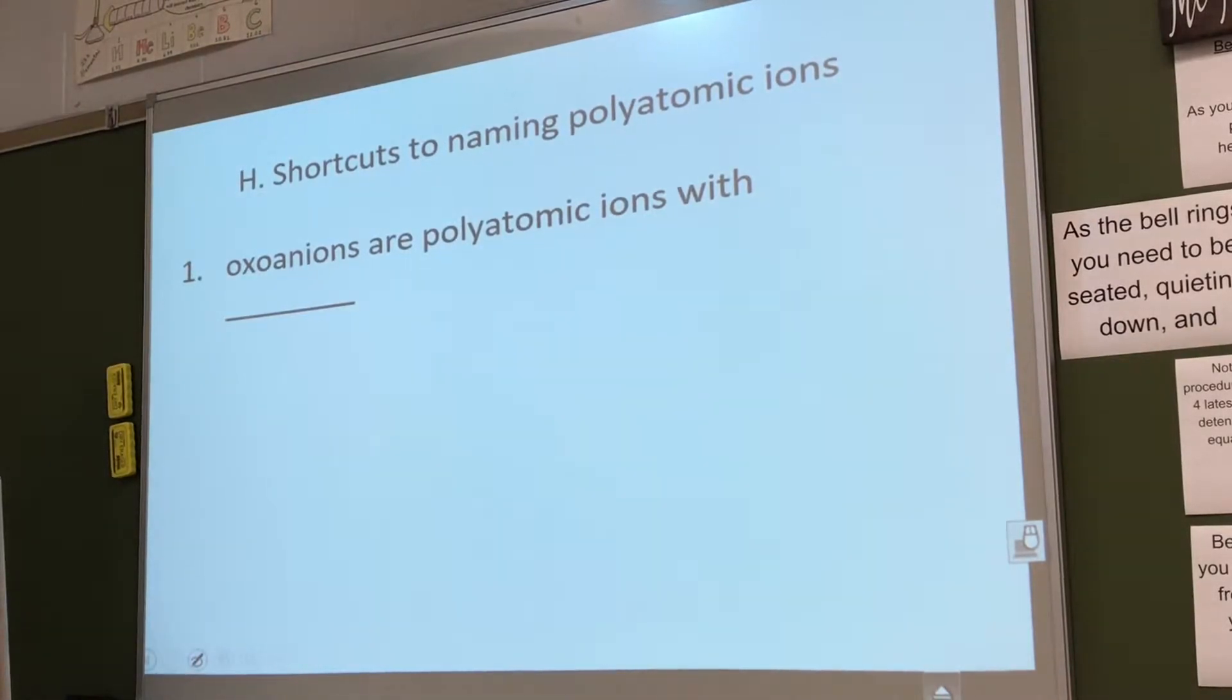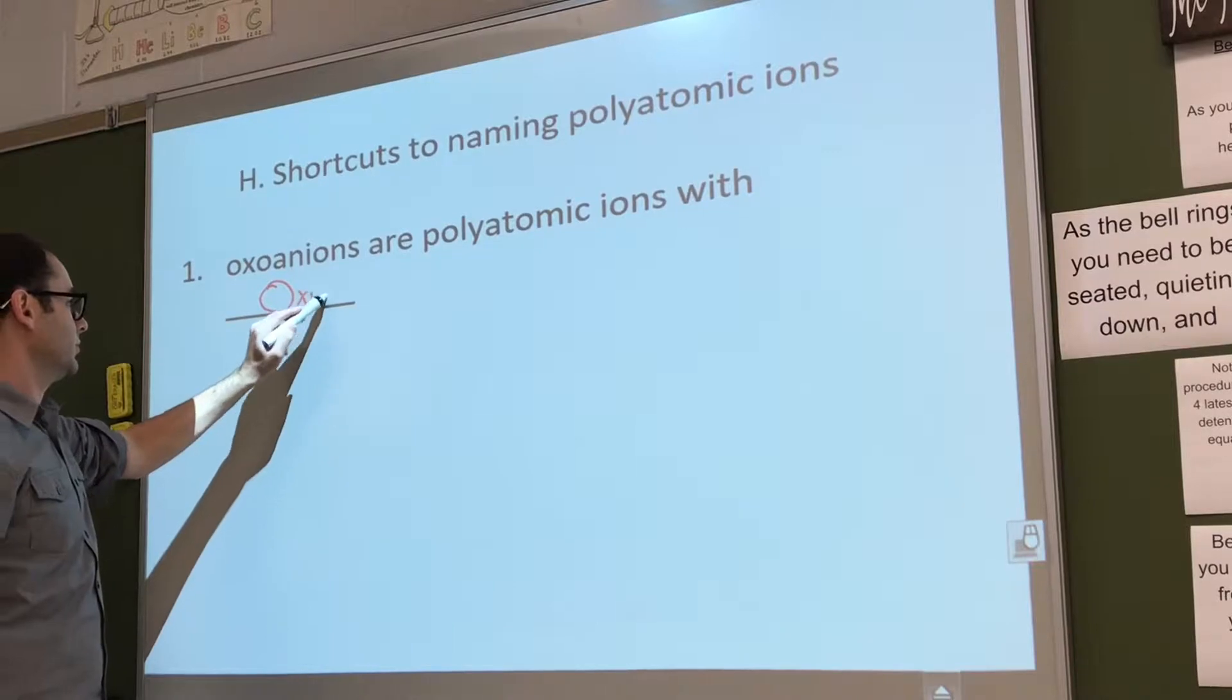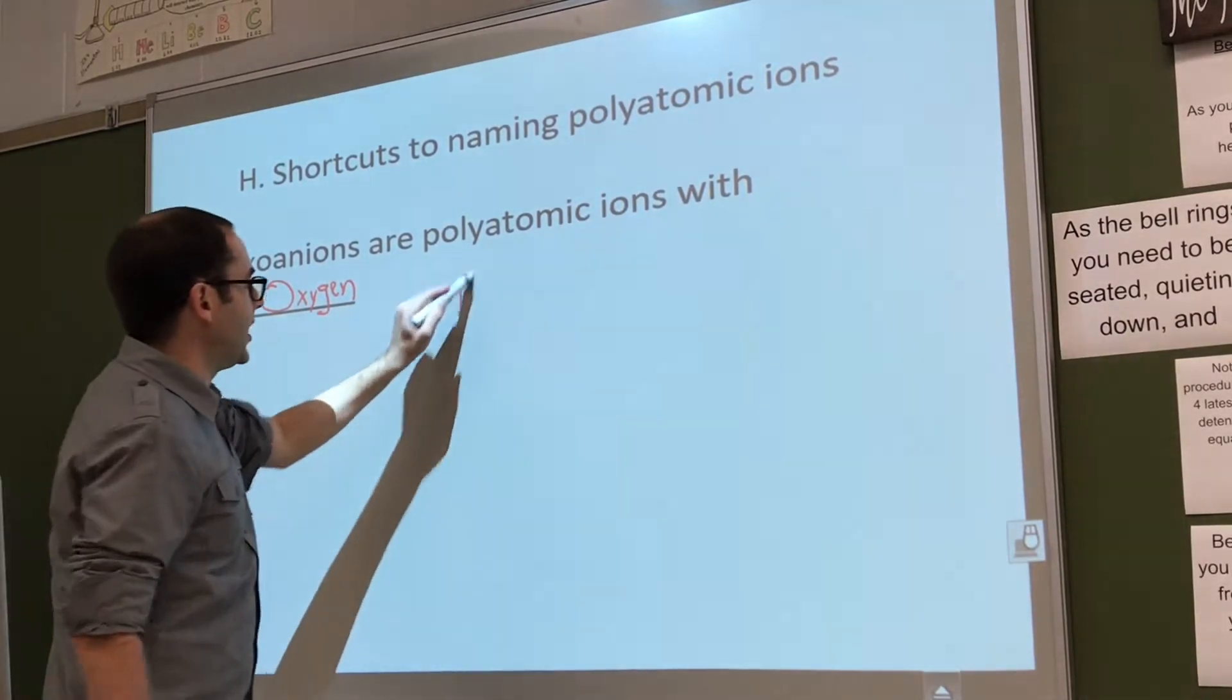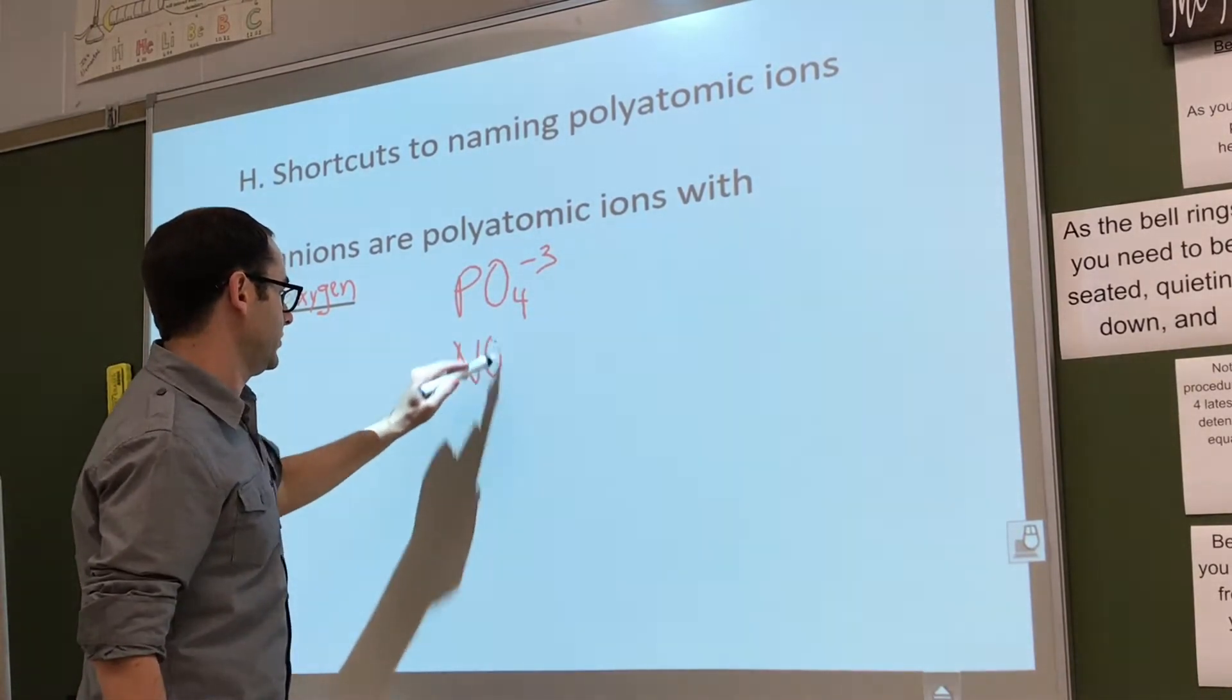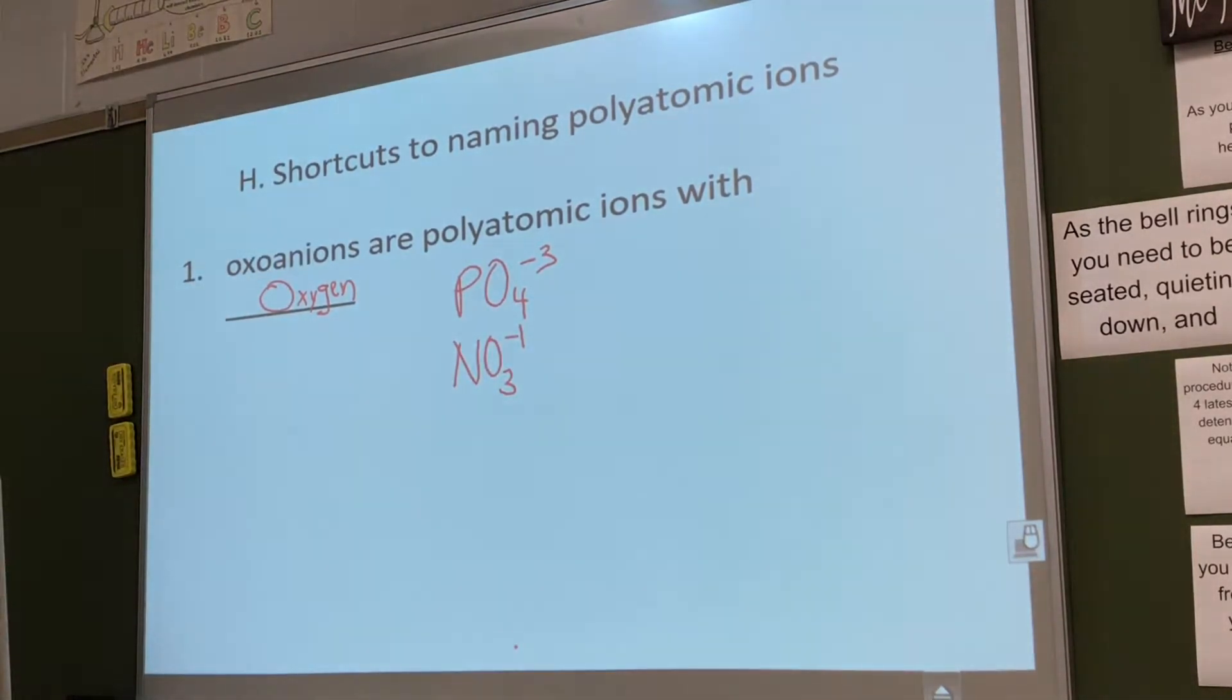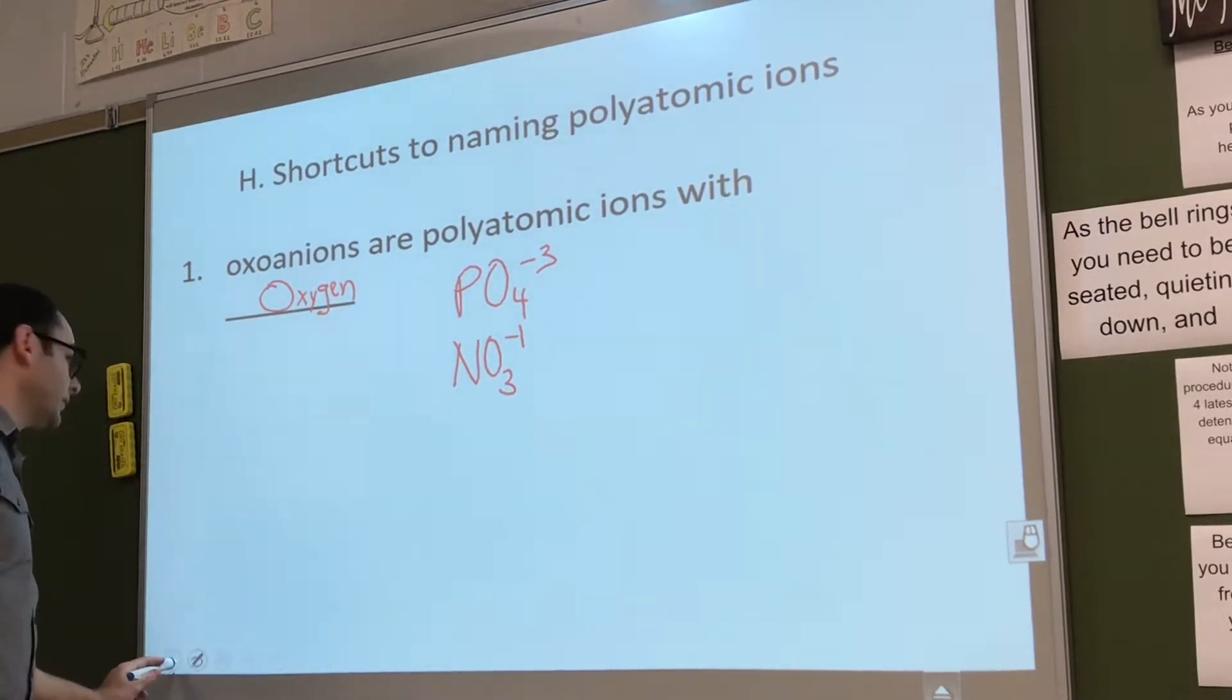So shortcuts to naming polyatomic ions. Oxo-anions are polyatomic ions with oxygen. Any polyatomic ion with oxygen is what we're going to be focused on today. The other thing is it's just the ones that end in oxygen, not hydroxide. These are the ones we're going to be talking about.